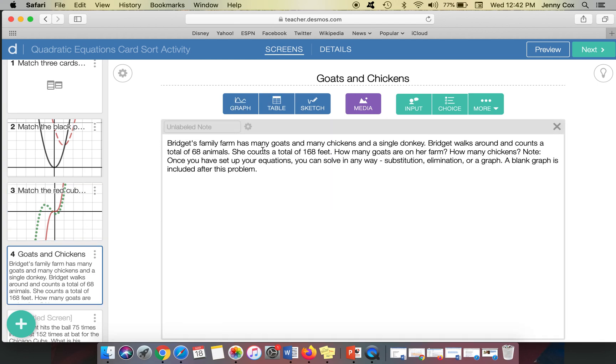So I have a niece named Bridget and she wants to be a veterinarian and she has many goats and chickens and a single donkey. And she walks around and she counts a total of 68 animals. So if I want to make this problem more engaging for my students, I can add images.